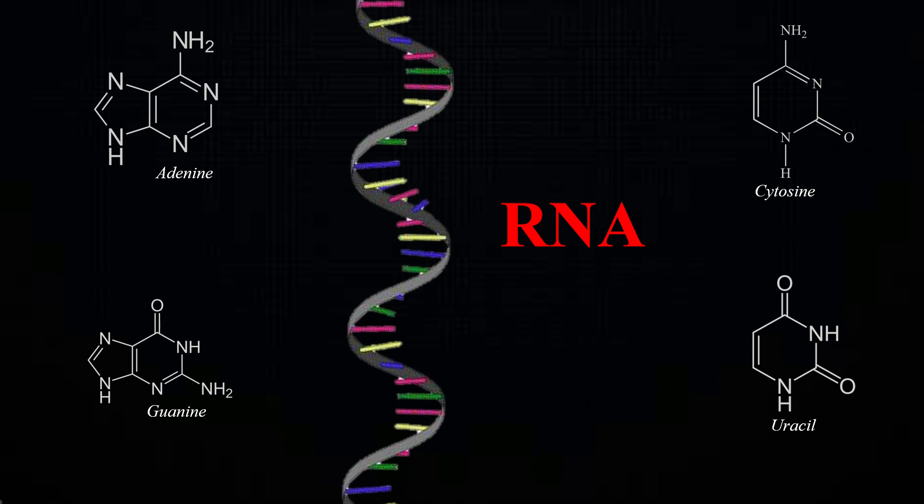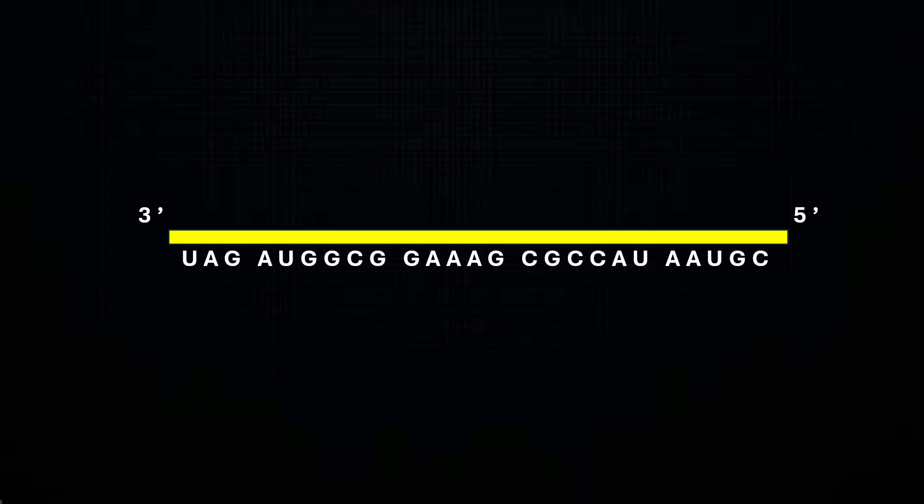RNA is a single-stranded nucleic acid and is shown here in its linear form. However, complementary regions in RNA can recognize each other on the molecule and hydrogen bond together, forming a small loop.